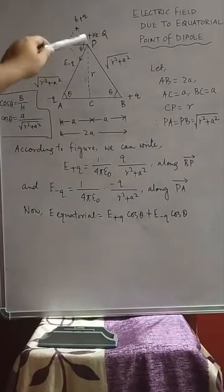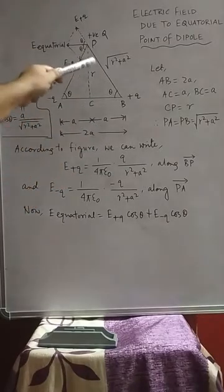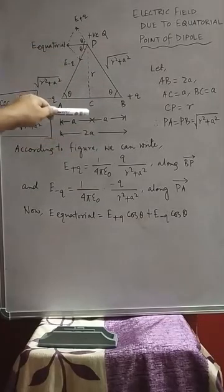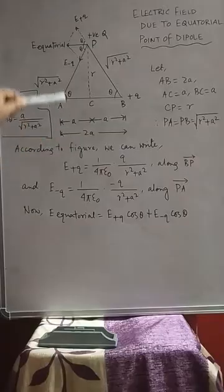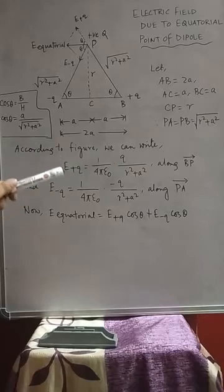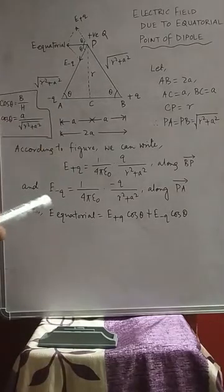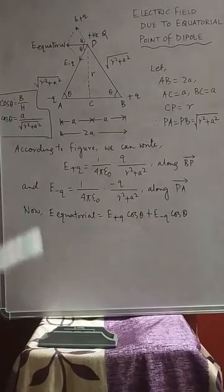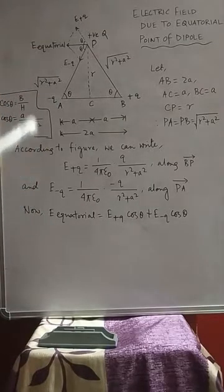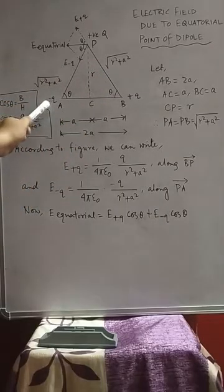Unlike the axial point concept, here P is a far point from the dipole and the distance between P and C is r. Since triangle PCA is a right angle triangle, we can use Pythagoras theorem to calculate distances PA and PB. Since BC or AC is a and PC is r, using Pythagoras theorem PA and PB will be root of (r² + a²).